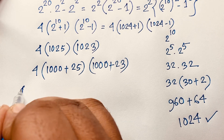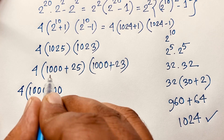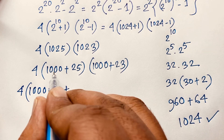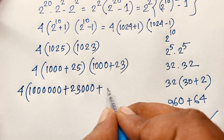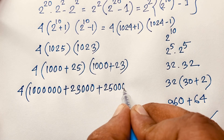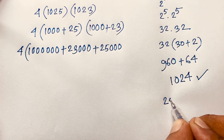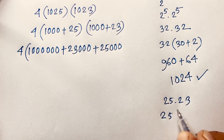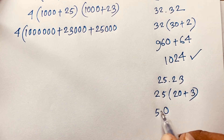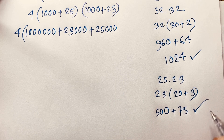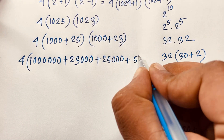Multiplying: 1000 times 1000 gives 1,000,000; 1000 times 23 gives 23,000; 25 times 1000 gives 25,000; and 25 times 23 is equal to what? 25 times 23 equals 25 times (20 plus 3), giving 500 plus 75, which equals 575.